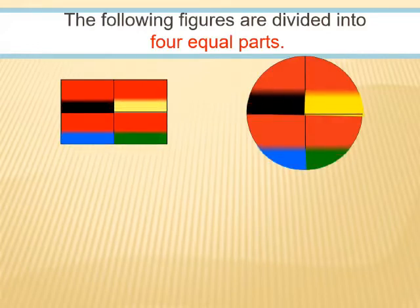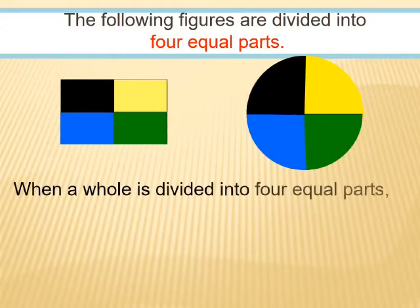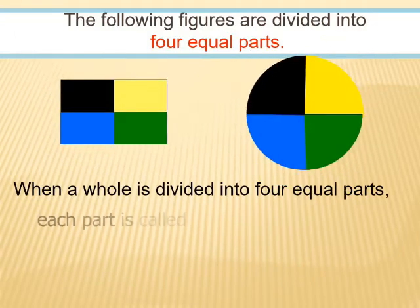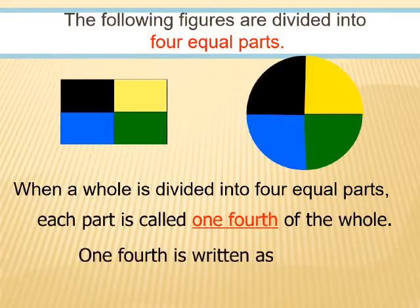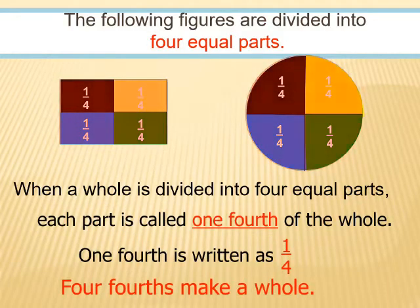The following figures are divided into four equal parts. When a whole is divided into four equal parts, each part is called one fourth of the whole. One fourth is written as one by four, and four fourths make a whole.